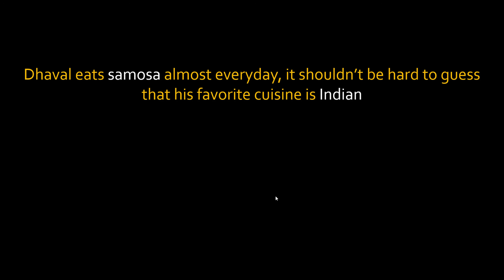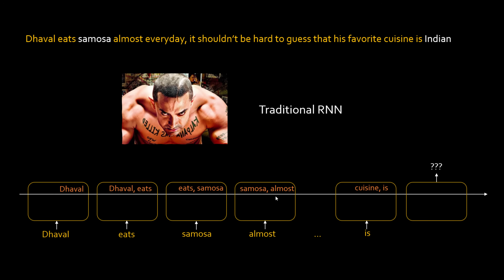Let's see how our traditional RNN would behave for this sentence. Traditional RNN, which is like Amir Khan of Ghazni having short-term memory, when you feed all these words, it can remember only, let's say, the last two words. So when you are at 'cuisine is,' it remembers 'is' and 'cuisine.' At this point, it doesn't have knowledge of 'samosa.' So for a traditional RNN, it is hard to make a guess that the cuisine is Indian.